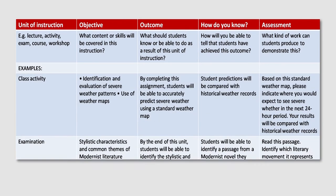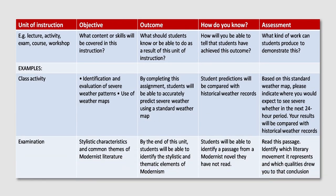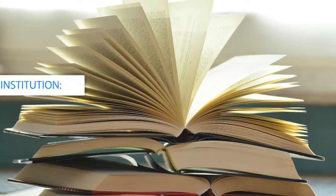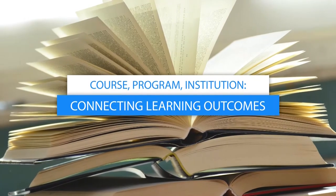This table has five columns. The first is the unit of instruction — what you will be teaching. The second is the objective — what is the purpose, and what content or skills will be covered. The third is the outcome — what should students know or be able to do as a result of this unit of instruction. The fourth is 'how do you know' — how will you be able to tell that students have achieved this outcome. The fifth is assessment — what kind of work can students produce to demonstrate this.